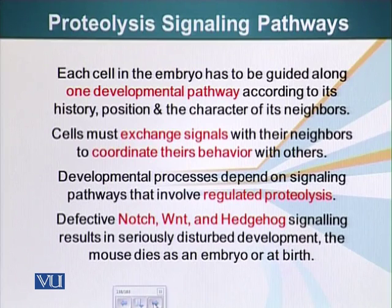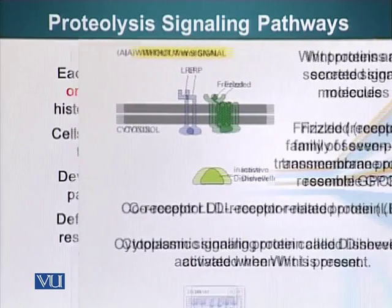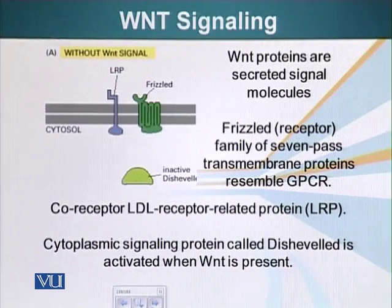Defects in these signaling systems result in seriously disturbed development, and generally if there is a mutation in genes coding these signaling systems, the mouse embryo dies at or before birth. Let's look at an example. We are going to talk first about the Wnt signaling system.